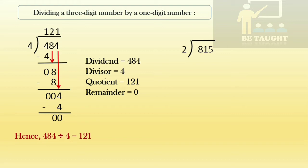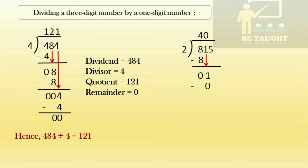Next sum: 815 divided by 2. Again we start by using one digit at a time. Eight will go how many times in the two times table? It is four — two fours are 8, eight minus eight is 0. We bring the one down using an arrow. Now one cannot go in the two times table, so it will be zero — two zeros are 0, one minus zero is 1.